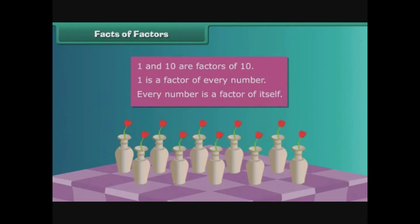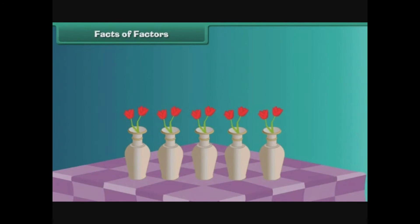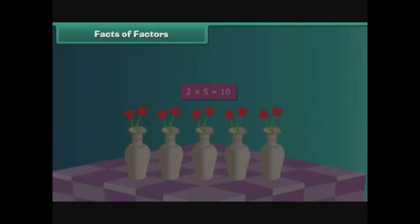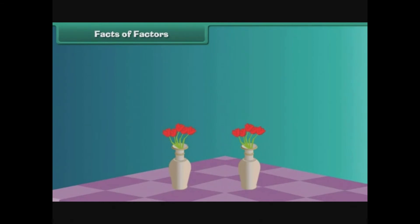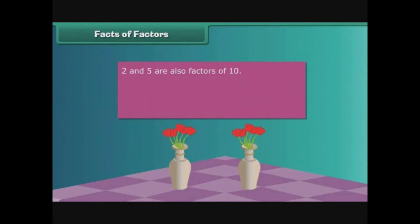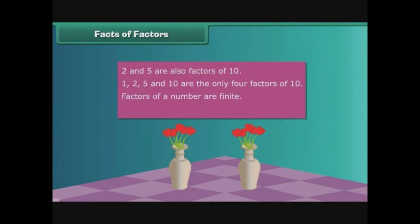Prena's mother tries another arrangement, placing two roses each in five vases: two multiplied by five is equal to ten. Then she places five roses each in two vases: five multiplied by two is equal to ten. Two and five are also factors of ten. As there are no more arrangements possible, one, two, five and ten are the only four factors of ten. Therefore, factors of a number are finite.